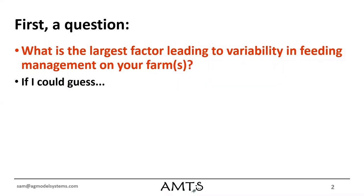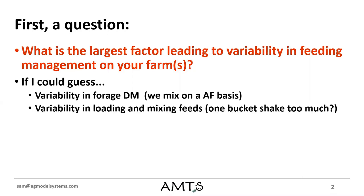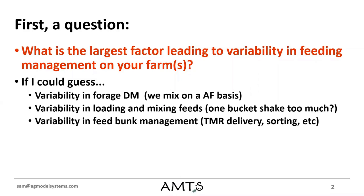Based on my experience, the answer on most farms would be related to variability in forage dry matter, because we always mix on an as-fed basis. There's also variability in loading or mixing of feeds — human error where you put in one little shake of the bucket too much and it's in the mixer and you can't take it back out. There can be variability in feed bunk management — are cows eating consistently across the length of the feed bunk, are they offered feed at a similar time each day? All of those things make delivery of the final TMR a critical part of the equation.